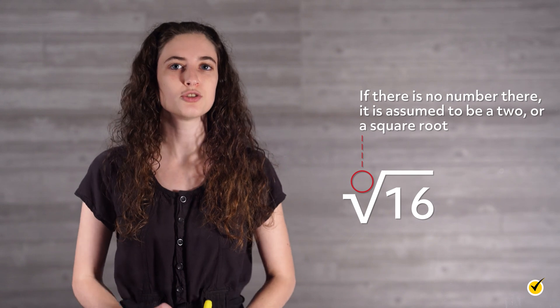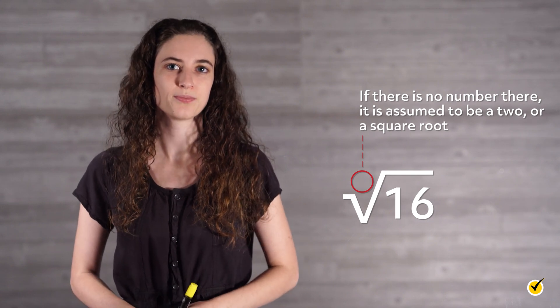The way you know how many times to multiply the number by itself is given by a small number put in the hook of the radical symbol. If there is no number there, it is assumed to be a two, or a square root.